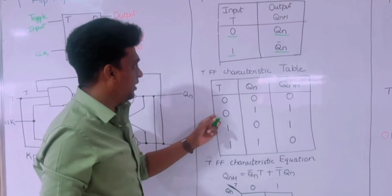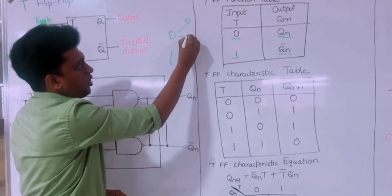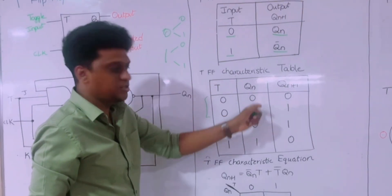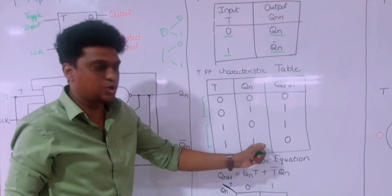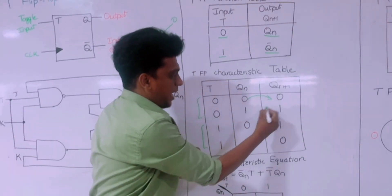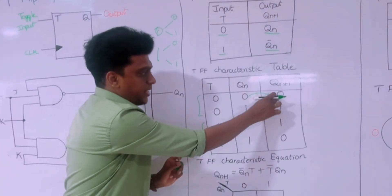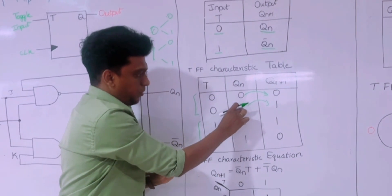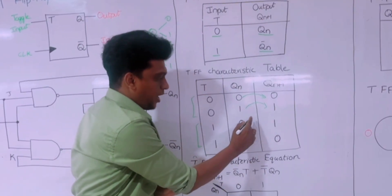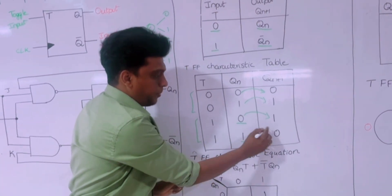This is the characteristics table. It has input 0 and 1, each with two present states 0 and 1. Whenever the input is 0, whatever is in the present state comes directly to the next state — so present state 0 gives next state 0, and present state 1 gives next state 1. When the input is 1, the present state value gets complemented in the next state — so 0 is complemented to 1, and 1 is complemented to 0.